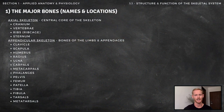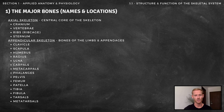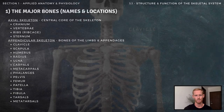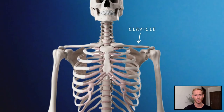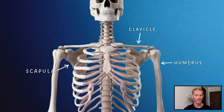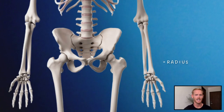The appendicular skeleton includes the bones of the arms, legs, hands and feet, and the structures that secure these bones to the axial skeleton. Starting at the top, the clavicle is commonly known as the collarbone, and the scapula is the shoulder blade. The humerus runs from the shoulder down to the elbow, where it articulates with the radius and ulna in the forearm. Remember that the radius is the one that sits in line with the thumb.